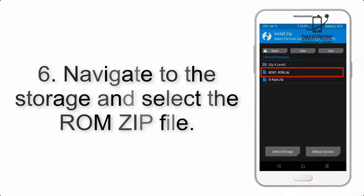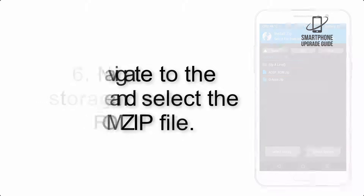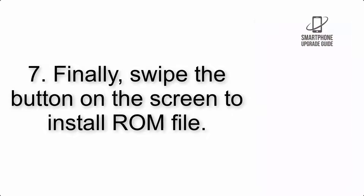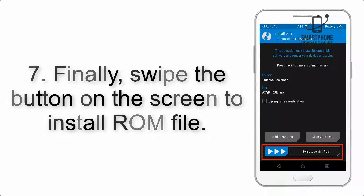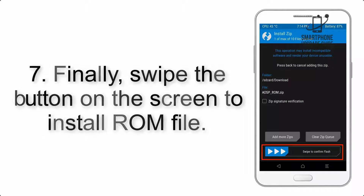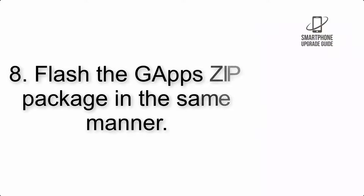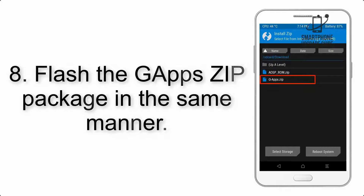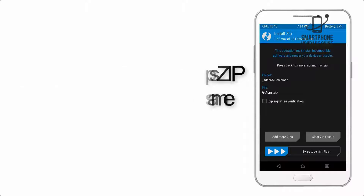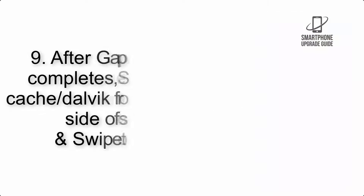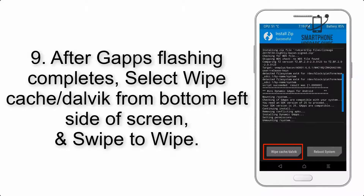Step 5: go back to the recovery main screen and tap on the Install button. Step 6: navigate to the storage and select the ROM zip file. Step 7: swipe the button on the screen to install the ROM file. Step 8: flash the GApps zip package in the same manner.